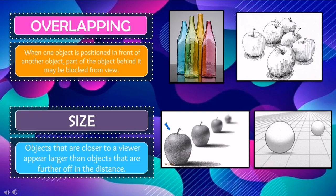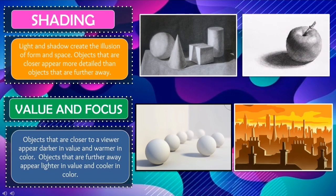Size: objects that are closer to a viewer appear larger than objects that are further off in the distance. Shading: light and shadow create the illusion of form in space. Objects that are closer appear more detailed than objects that are further away.